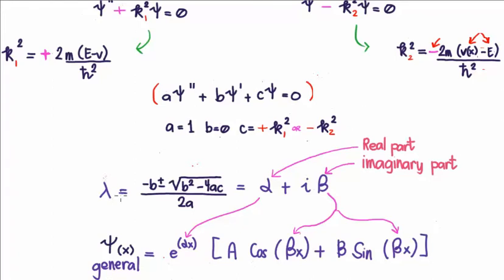Now, because lambda is a complex number, it has a real component alpha, and an imaginary component beta. And this, now, is all we need in order to write down the general solution to the time independent Schrödinger equation. And it is given in the bottom centre of your screen. So, we have e to the alpha x, where that's just a real exponential, outside of a linear combination of cosines and sines, where the argument of the cosines and sines is beta x, where beta is the imaginary part of your solution lambda to your characteristic equation.